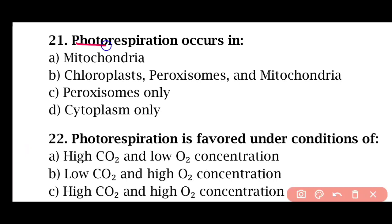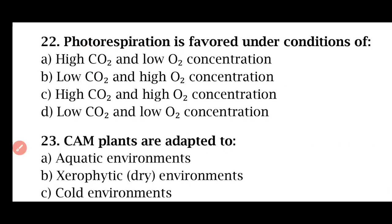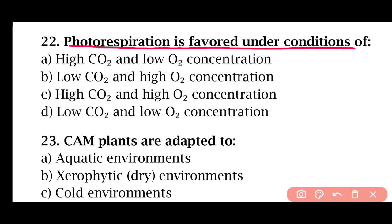Question 21: Photorespiration occurs in — mitochondria; chloroplasts, peroxisomes, and mitochondria; peroxisomes only; or cytoplasm only. The correct answer is option B. Photorespiration occurs in chloroplasts, peroxisomes, and mitochondria. Question 22: Photorespiration is favored under — high CO2 and low O2; low CO2 and high O2; high CO2 and high O2; or low concentration of both. The correct answer is option B. Photorespiration is higher in the presence of low carbon dioxide and high oxygen concentration.